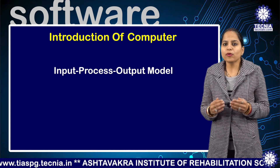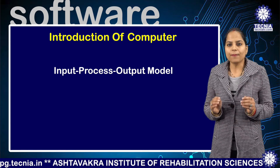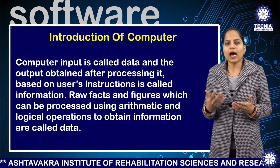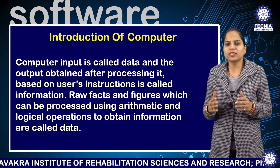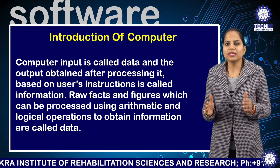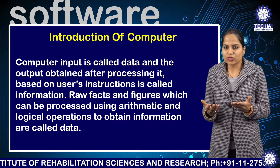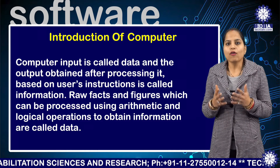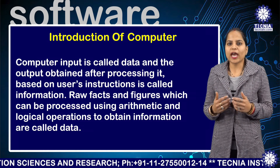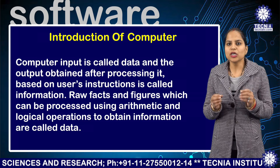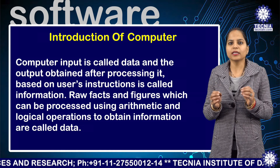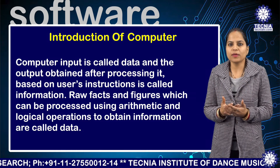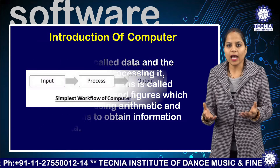In the input-process-output model, the computer input is called data and the output obtained after processing it based on user instructions is called information. Raw facts and figures which can be processed using arithmetic and logical operations to obtain information are called data.